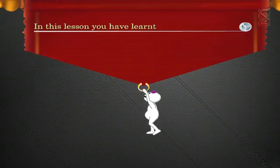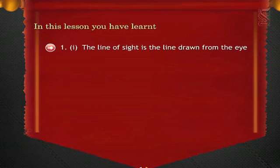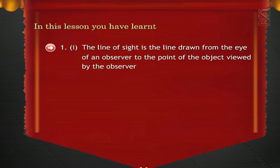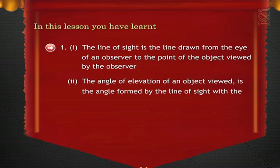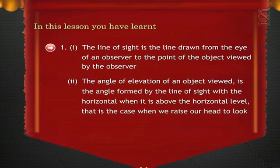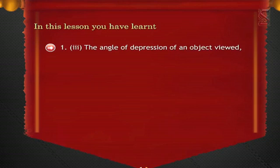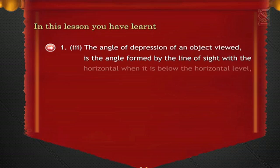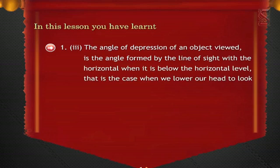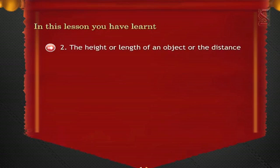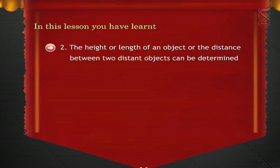In this lesson, you have learnt that the line of sight is the line drawn from the eye of an observer to the point of the object viewed. The angle of elevation of an object viewed is the angle formed by the line of sight with the horizontal when it is above the horizontal level, i.e. when we raise our head to look at the object. The angle of depression of an object viewed is the angle formed by the line of sight with the horizontal when it is below the horizontal level, i.e. when we lower our head to look at the object. The height or length of an object or the distance between two distant objects can be determined with the help of trigonometric ratios.